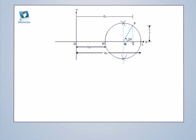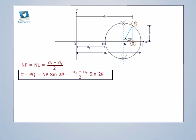Now from the Mohr's diagram, np is equal to nl is equal to sigma x minus sigma y upon 2. Tau is equal to pq is equal to np sin 2 theta.